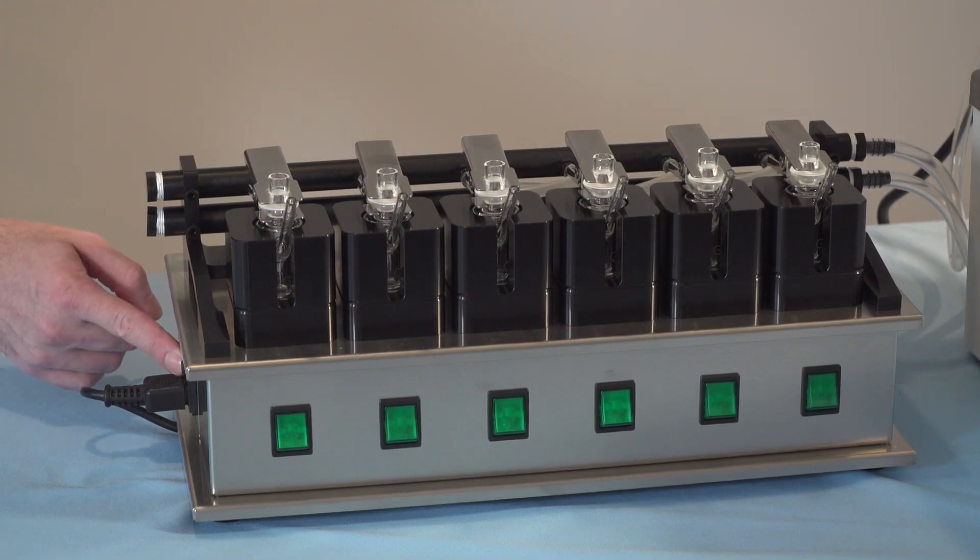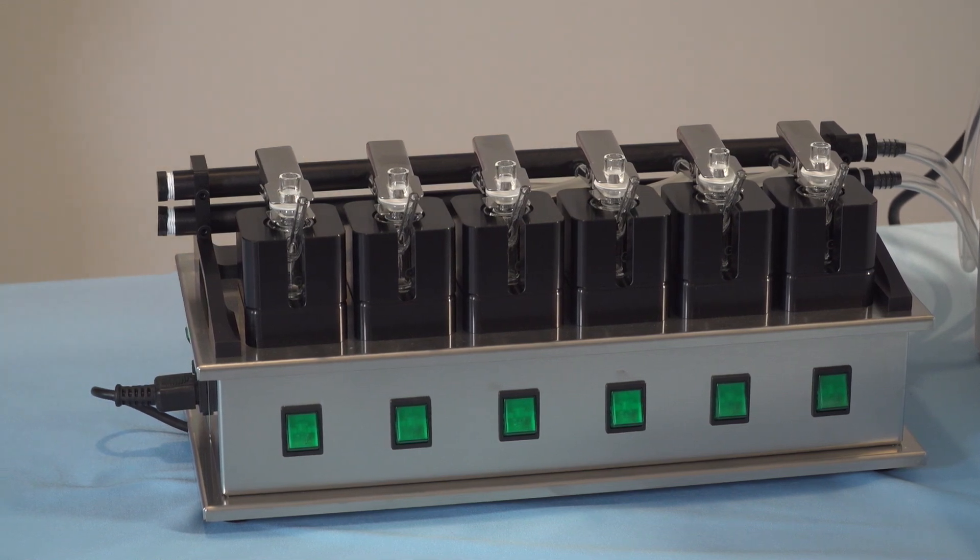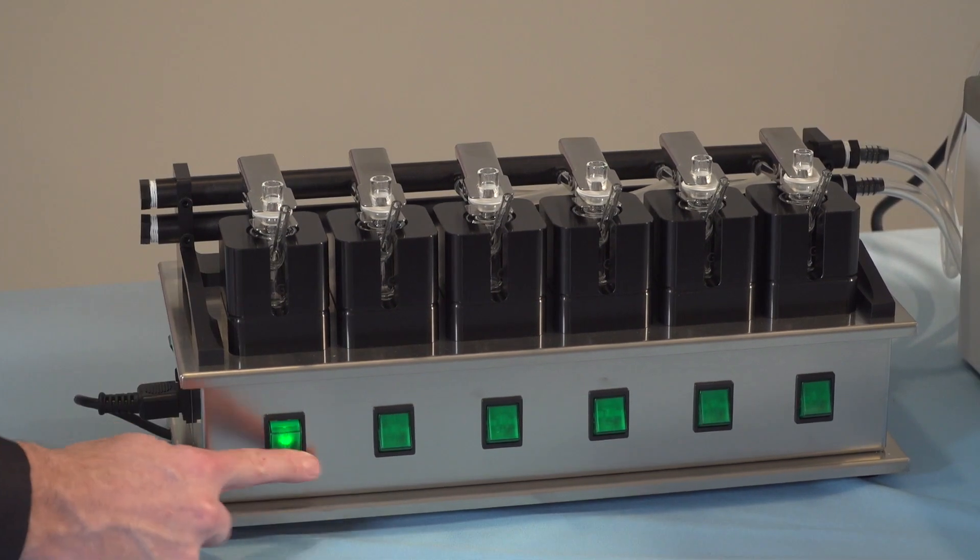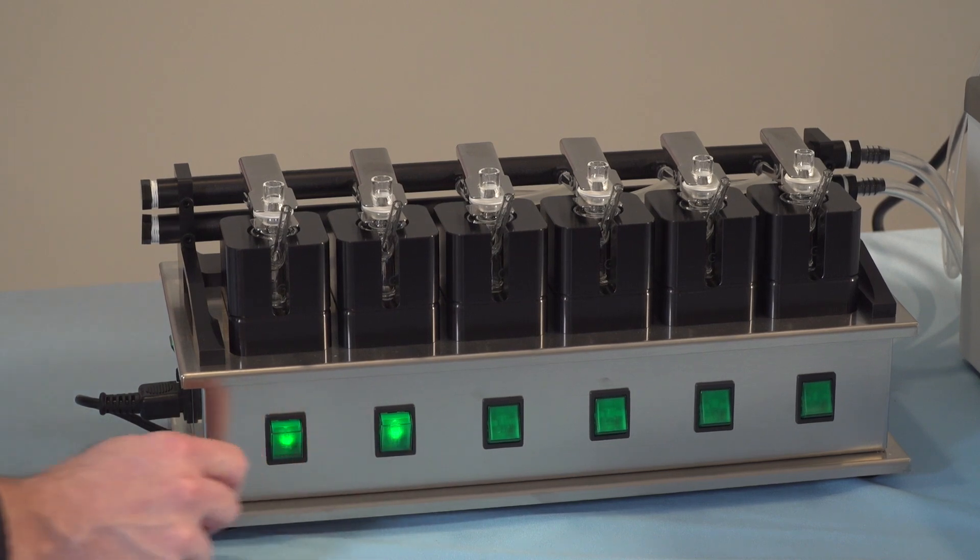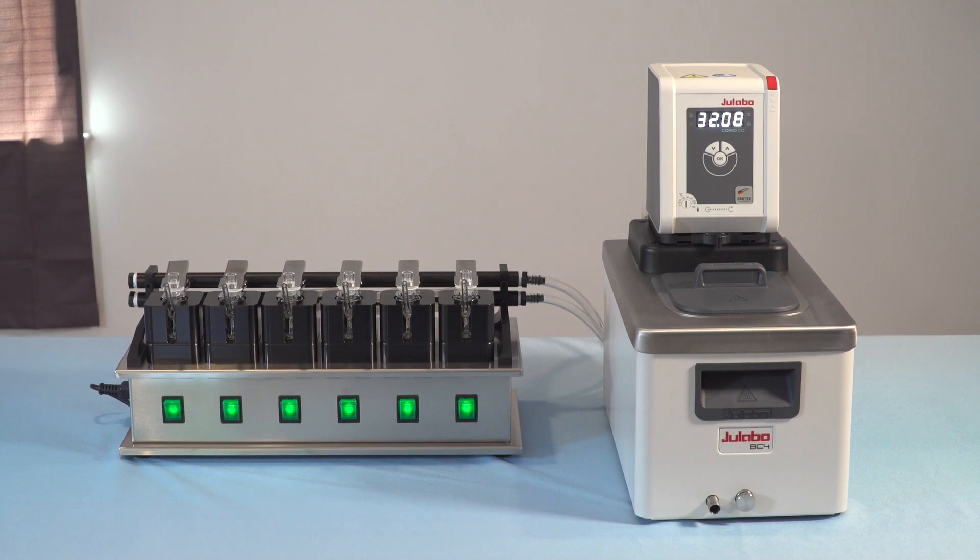Ensure the master power switch is turned on. Then use the power switch on the side to turn on the fan. For each position used, turn on the stirrer. Unused positions can be left off. When the switch is turned on, it will light up to indicate it has power and is running.